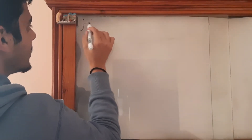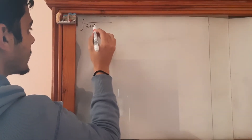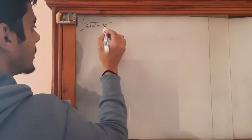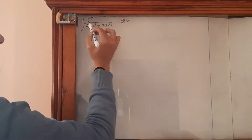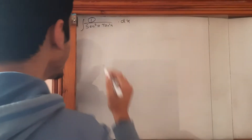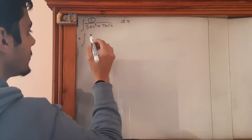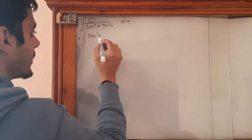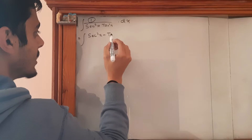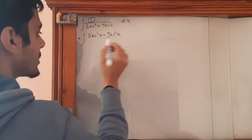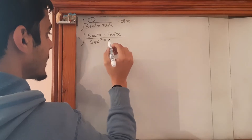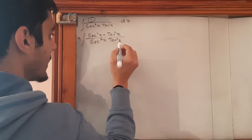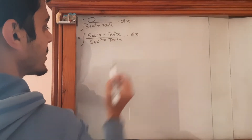Integration of 1 upon sec square x times tan square x dx. Let's try to change this in terms of sec and tan. We can write this as sec square x minus tan square x upon sec square x times tan square x dx.